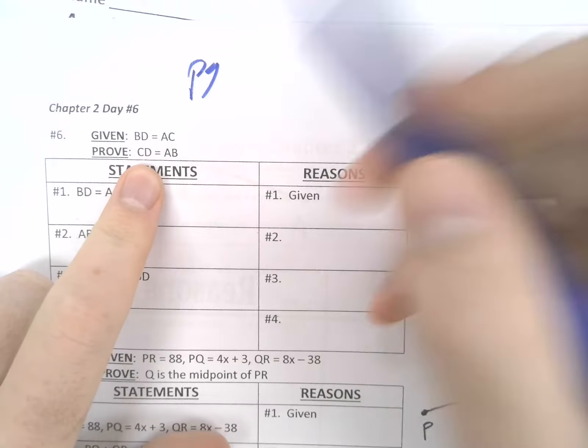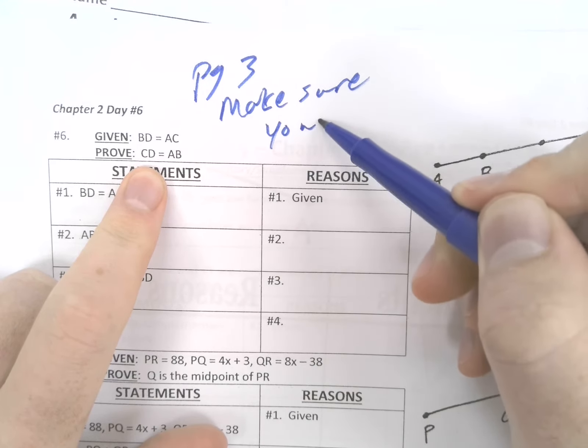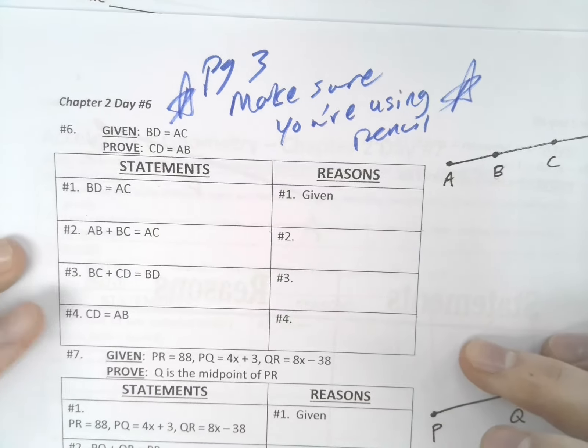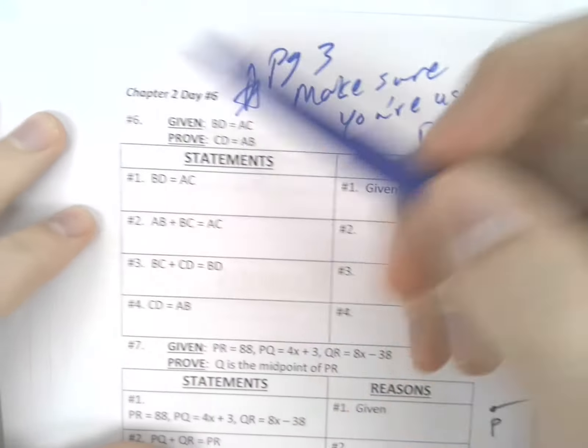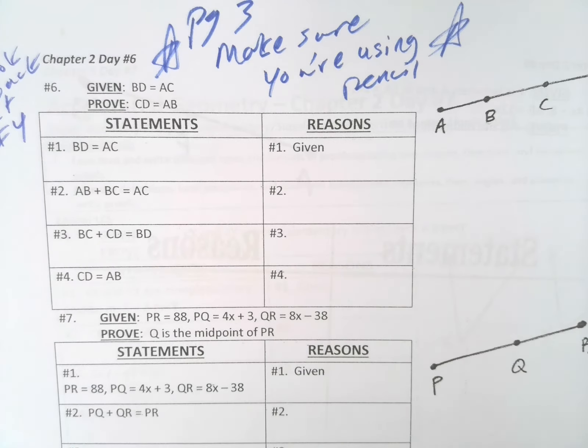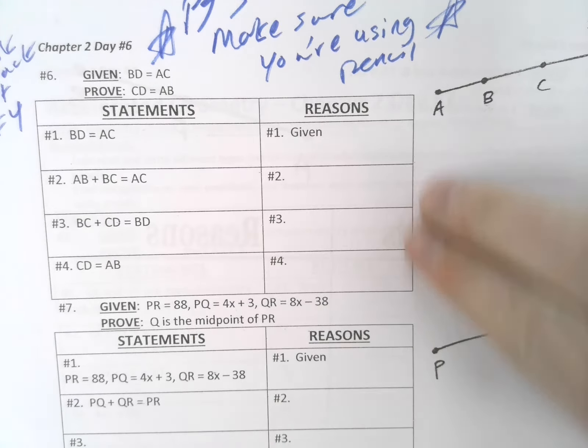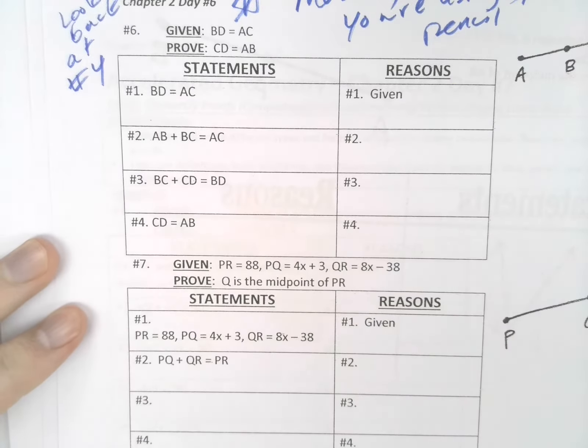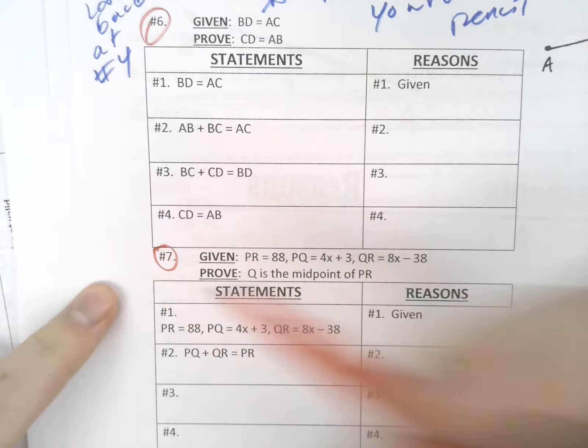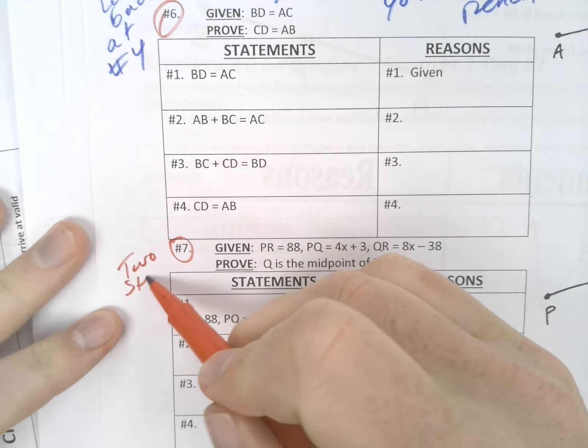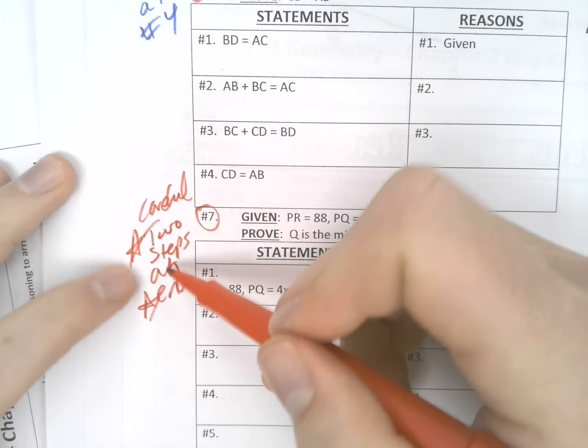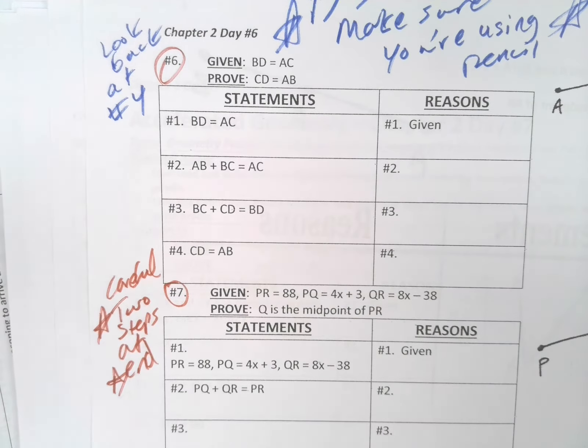So now we're on page 3. Make sure you're using pencil. I'm going to give you guys chances on both 6 and 7. Now number 6, you can look back at number 4 on the previous page if you want some help. But be very careful on number 7, guys. There's 2 steps, especially at the end, that may trip you up.